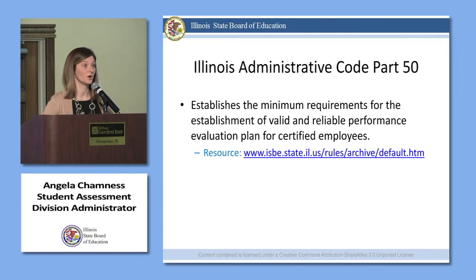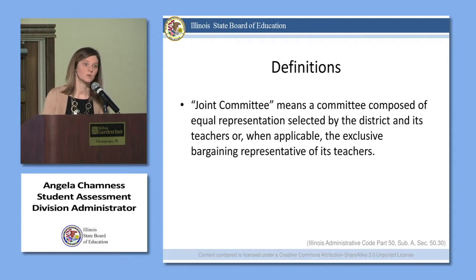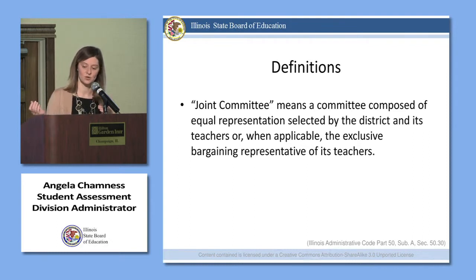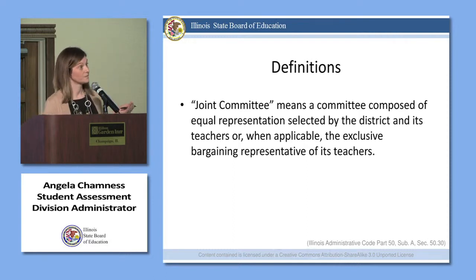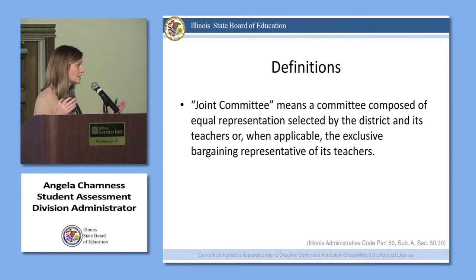I'm going to walk you through a few of the critical definitions you'll need as you think about student growth for the purpose of teacher evaluation. Within the Part 50 rules there's reference to a joint committee — that's the committee comprised of equal representation between the district and its teachers, or when applicable, the bargaining representation of the teachers. The size of that joint committee varies based on district size.